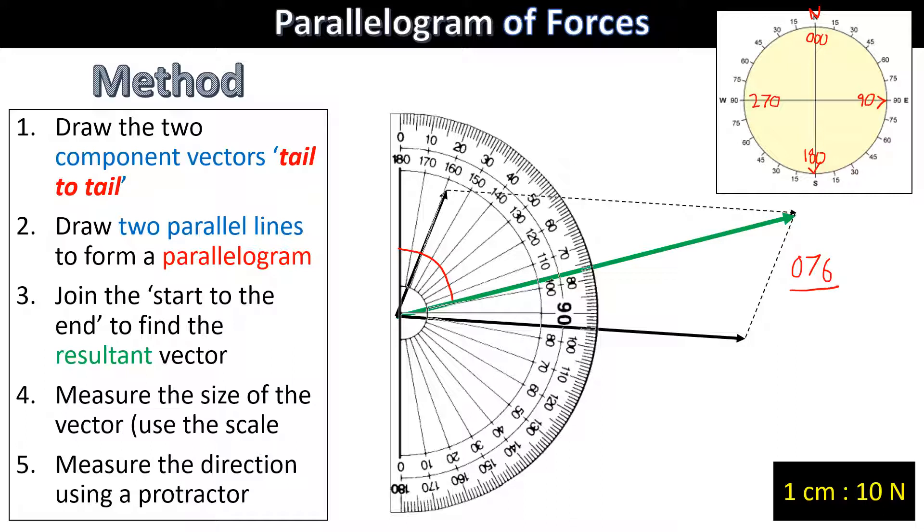Our final answer would be: this vector has a magnitude of 97 newtons at a bearing of 060 degrees. There's our final answer.